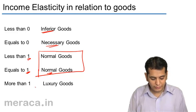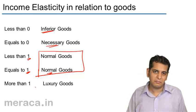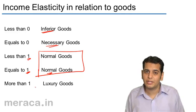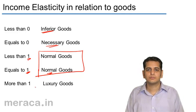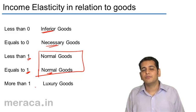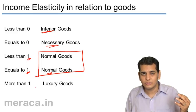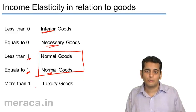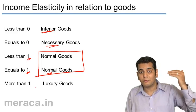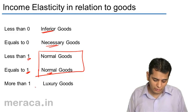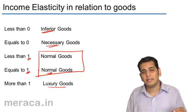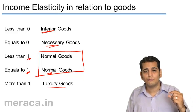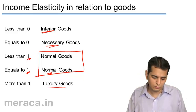Finally, when the income elasticity of demand is greater than one, we can assume that the goods being considered are luxury goods. Because as our income rises, we have a tendency to show off our wealth and prosperity. So as our income rises, we tend to buy more and more luxurious goods. Thus, the elasticity of demand in relation to income for luxury goods is always more than one.